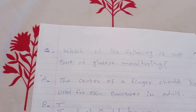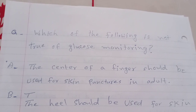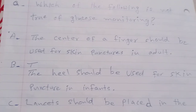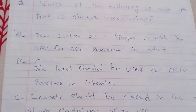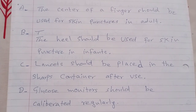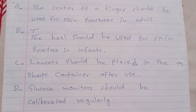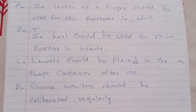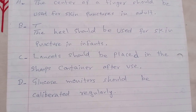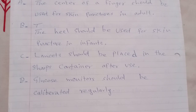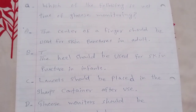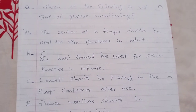What of the following is not true of glucose monitoring? A. The center of a finger should be used for skin puncture in adults. B. The heel should be used for skin puncture in infants. C. Lancets should be placed in the sharps container after use. D. Glucose monitors should be calibrated regularly. The answer is A: the center of a finger should be used for skin puncture in adults.